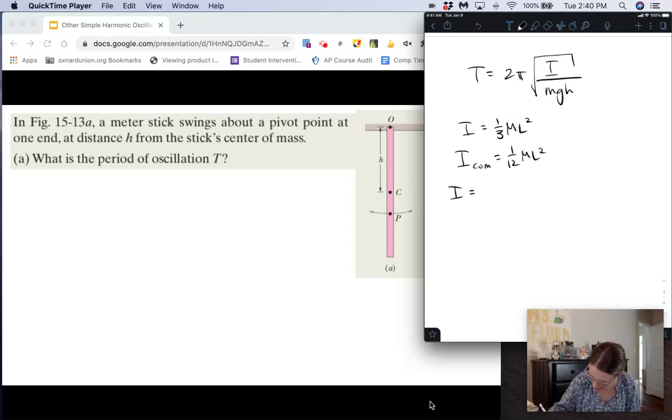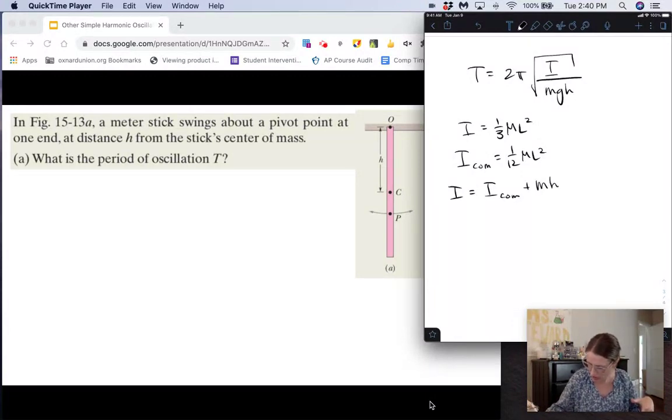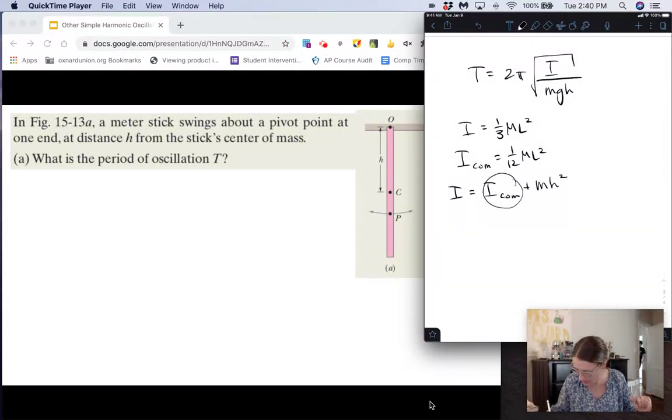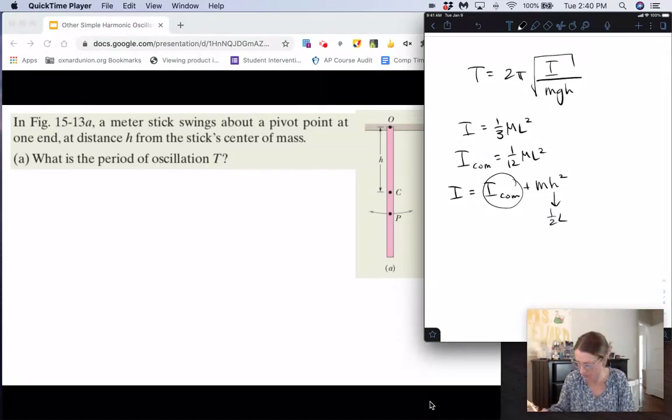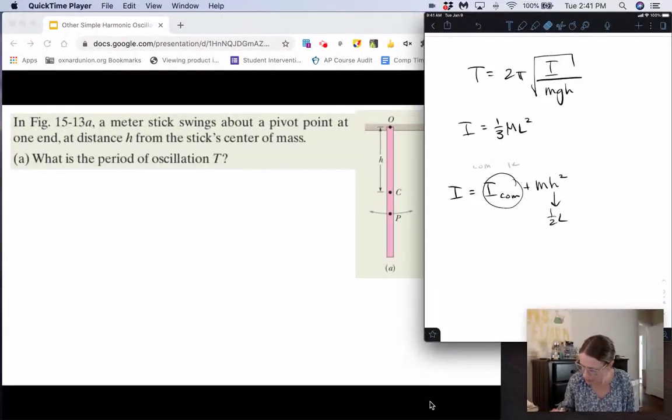and then the parallel axis theorem says that when we rotate this about an axis that's parallel to an axis through the center of mass, that will be the rotational inertia through the center of mass plus that mh squared. So all you have to do here is plug in one-twelfth mL squared for this right here, and then you get that h will be one-half L, because this is the distance from the center of mass to that new axis of rotation if we're rotating it about the end, and then you get the common denominator, add them together, you end up getting one-third mL squared. So if you don't remember that one-third mL squared, you can find that from the parallel axis theorem.